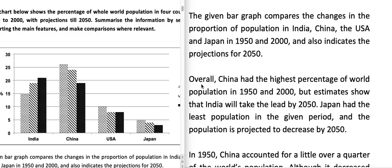Hello students, today I'm going to discuss a graph which has been seen in the past in the academic IELTS writing test. This is a column graph. The chart below shows the percentage of the whole world population in four countries from 1950 to 2000 with projections till 2050. Summarize the information by selecting and reporting the main features and make comparisons where relevant.